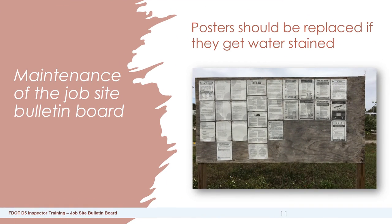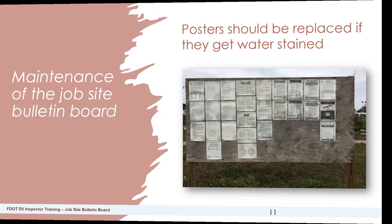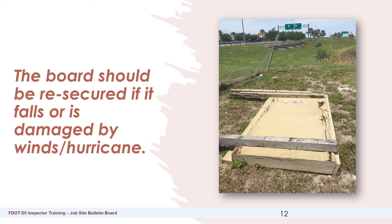Maintenance of the jobsite bulletin board: being that we are in Florida, we get a lot of rain and posters will get damaged. Posters should be replaced if they get water stained and are no longer legible. If they are still legible, it is up to the RCS's discretion if they need to be changed. The board should be re-secured if it falls or is damaged by winds or hurricanes. If the board or posters are stolen, they also need to be replaced by the prime.